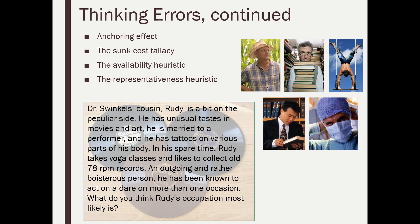You're probably a little gun-shy because I just explained the representativeness heuristic, so hopefully you're saying maybe he could be a doctor or something. But if we are using the representativeness heuristic, the characteristics described for Rudy make it seem like he might be a trapeze artist — his wife's a performer, he has tattoos, likes 78 rpm records, takes yoga classes, is outgoing and boisterous, willing to take dares. It sounds like trapeze artist matches better than anything else.